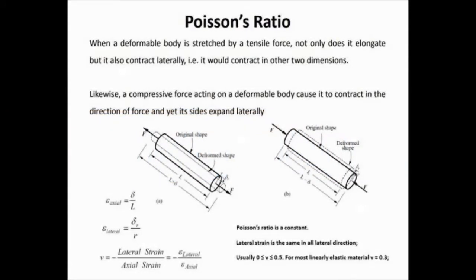In this video I will present what is Poisson's ratio. We know that when a deformable body is stretched by tensile forces, it not only elongates but it contracts laterally. This means if we are applying force in the x-axis, then the body will elongate in the x-axis as shown, but it will contract in other axes.